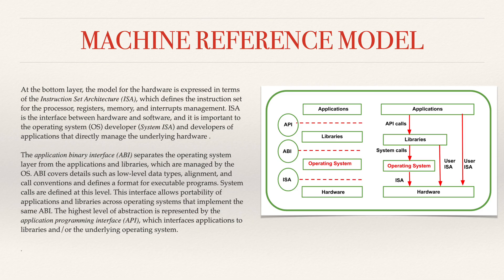Coming to ABI: ABI stands for Application Binary Interface. It separates the operating system layer from the applications and libraries managed by the operating system. ABI covers details such as low-level data types, alignment, and call conventions, and defines a format for executable programs. System calls are defined at this level. This interface allows portability of applications and libraries across operating systems that implement the same ABI.